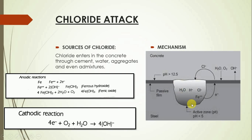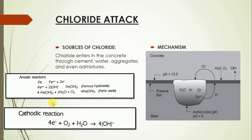Electrons travel into the cathode region, where they react with atmospheric oxygen and atmospheric moisture to form OH⁻ ions. These OH⁻ ions are further transported into the electrolyte, where they react with ferrous ions to form ferrous hydroxide. This ferrous hydroxide further oxidizes to form ferric oxide, which is rust, and hence the deterioration of the structure takes place.